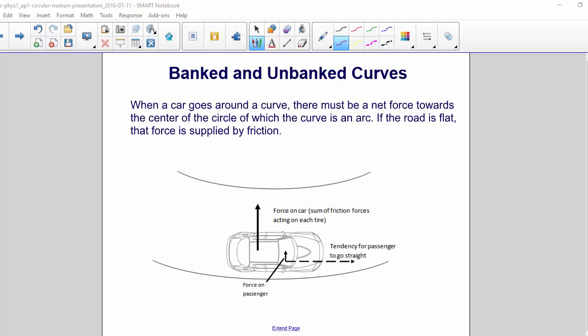Horizontal Uniform Circular Motion. When a car goes around a curve, there must be a net force towards the center of the circle of which the curve is an arc. If the road is flat, that force is supplied by friction.